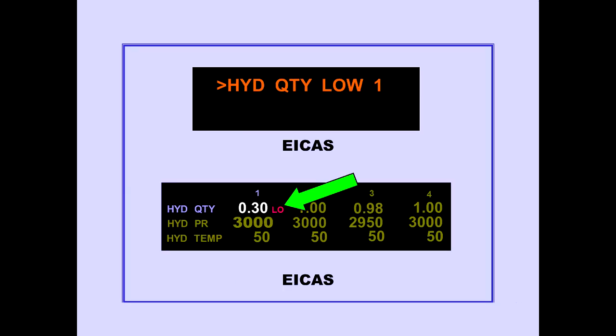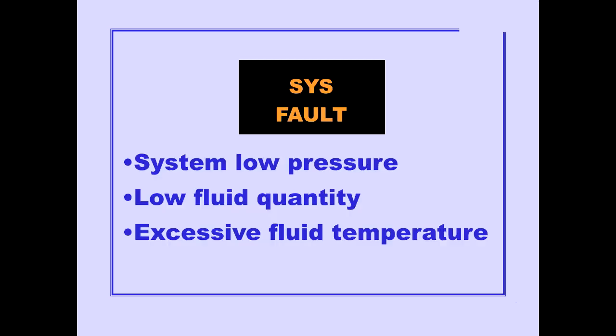When the reservoir quantity is at or below the system low level, the letters LO are displayed next to the quantity on the ICAS Status page. Recall that three conditions will cause a system fault light to illuminate: system low pressure, low fluid quantity, or excessive fluid temperature.